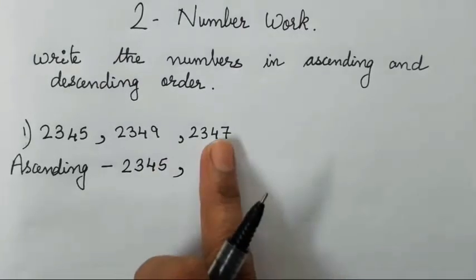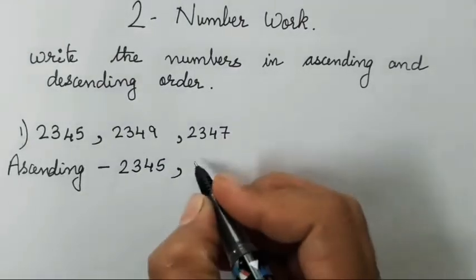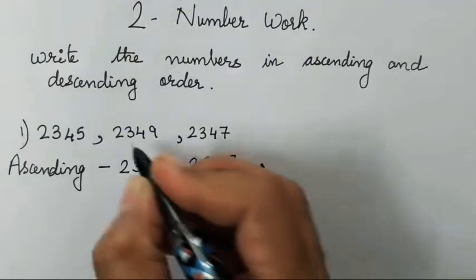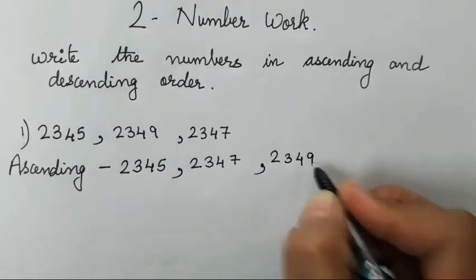Then after 5, 7 will come. Isn't it? So therefore 2347 and last 2349.